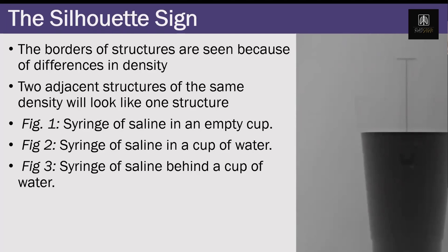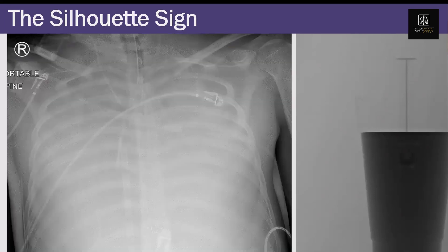In the next picture I filled the cup with water, and now you can't see the syringe anymore — it looks like just a cup of water. This is what would happen if a patient had diffuse pneumonia in both lungs: the heart borders would be invisible. That's our example where there's diffuse pneumonia in both lungs and we don't see the heart.